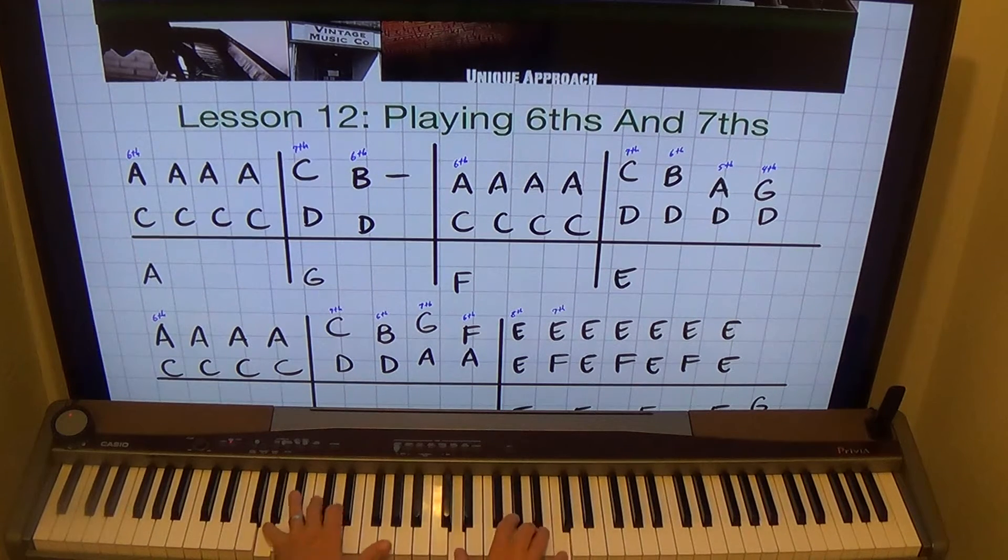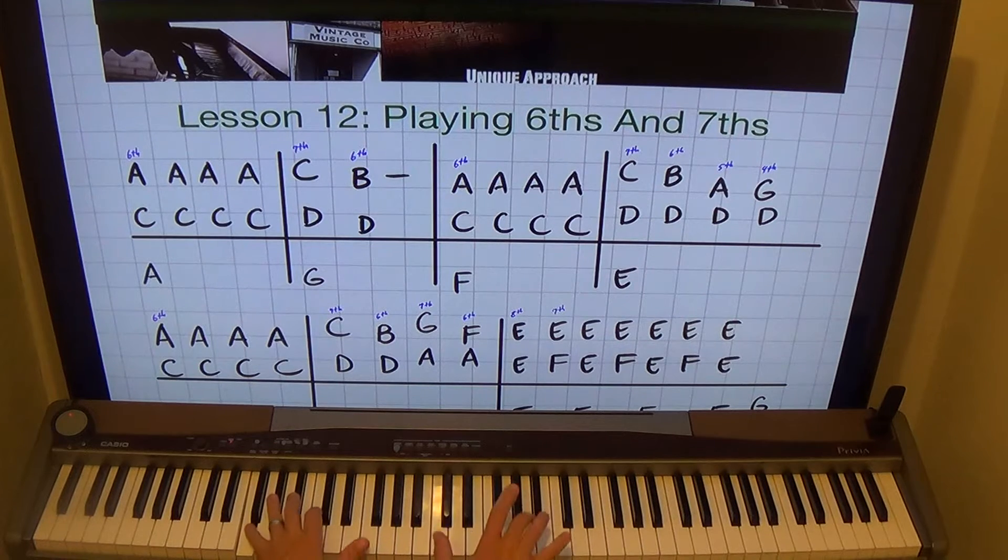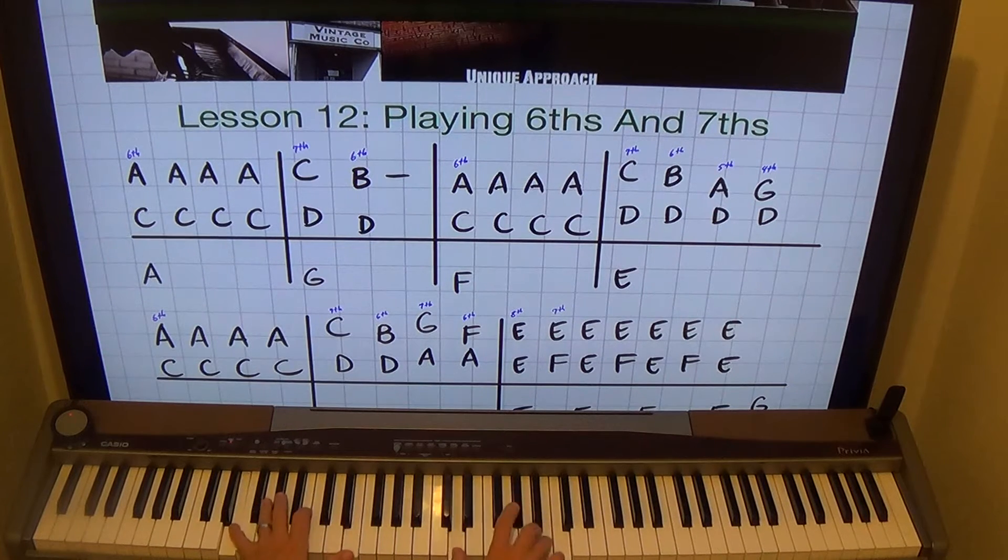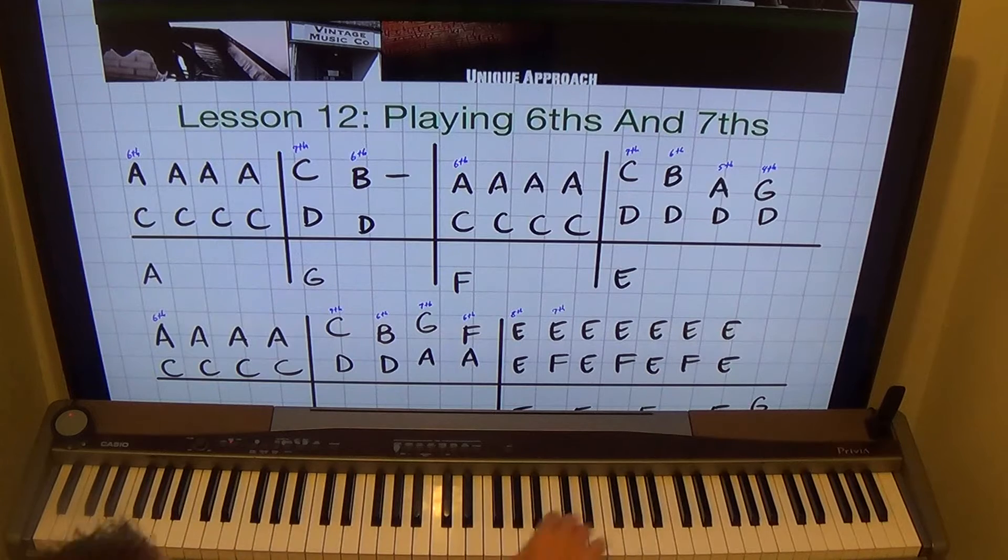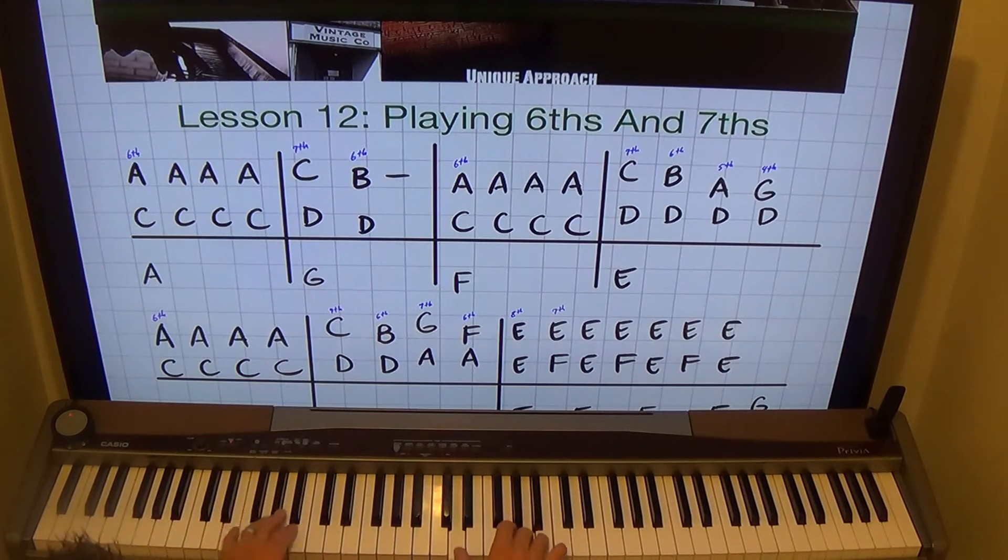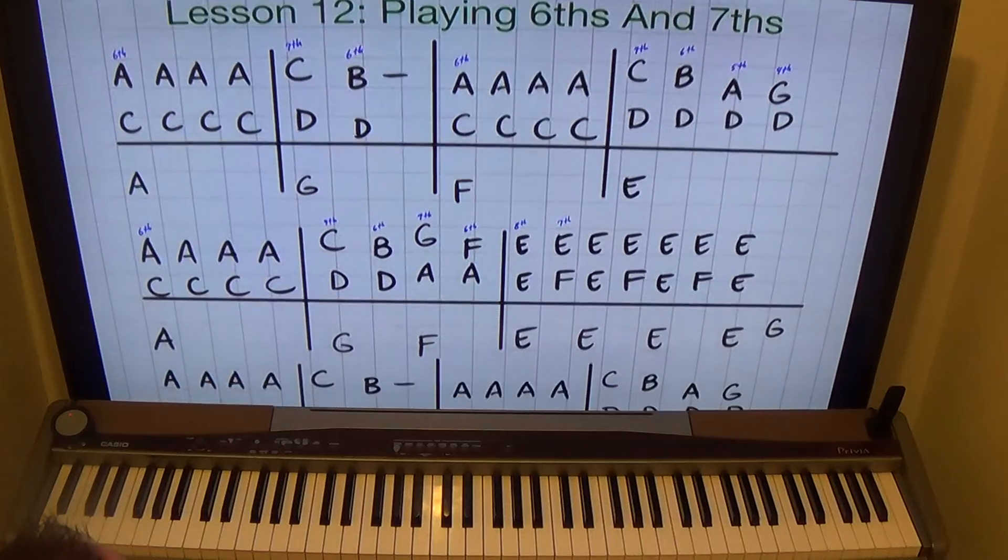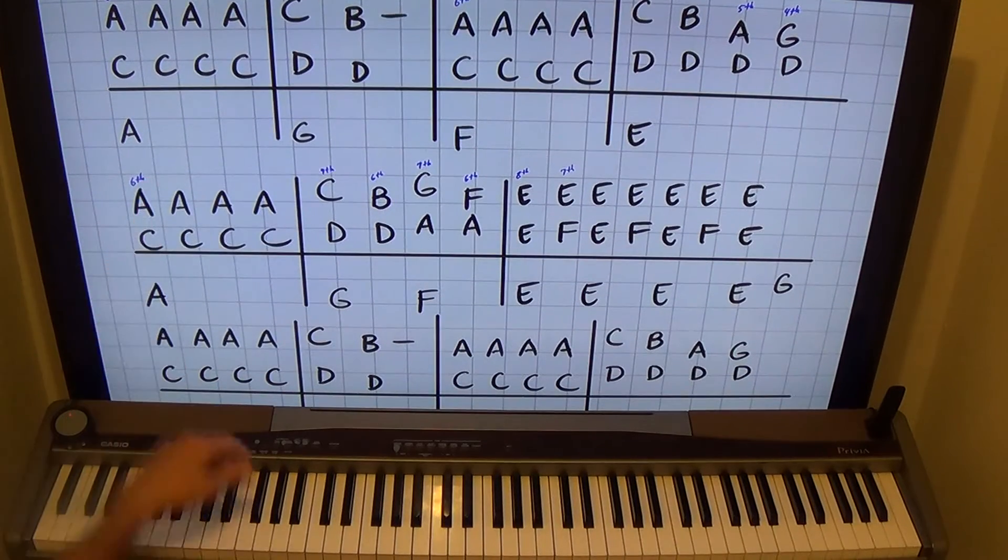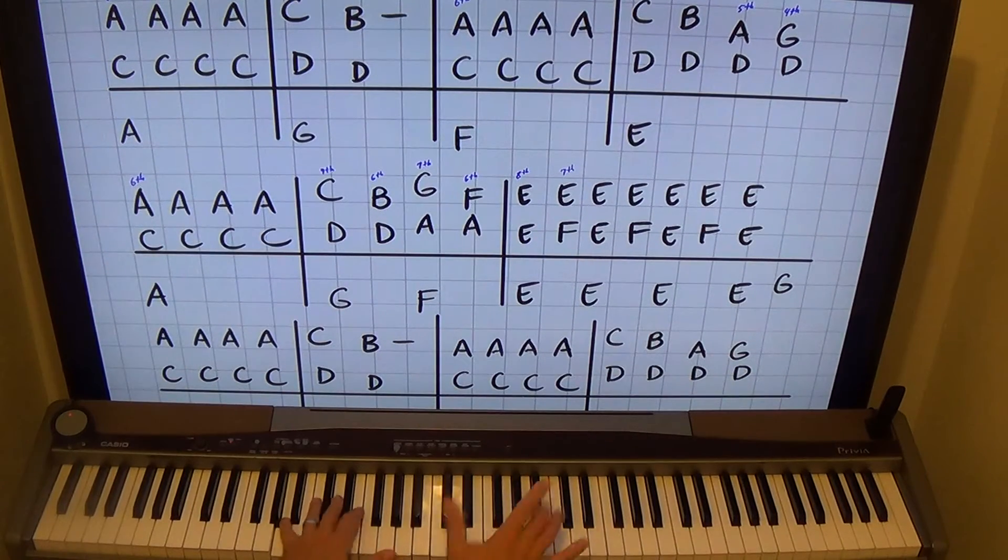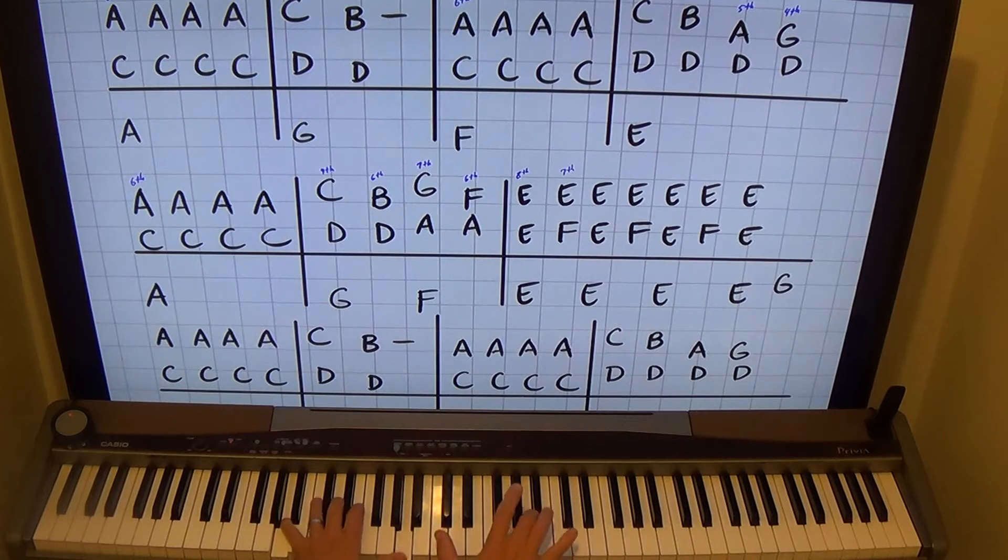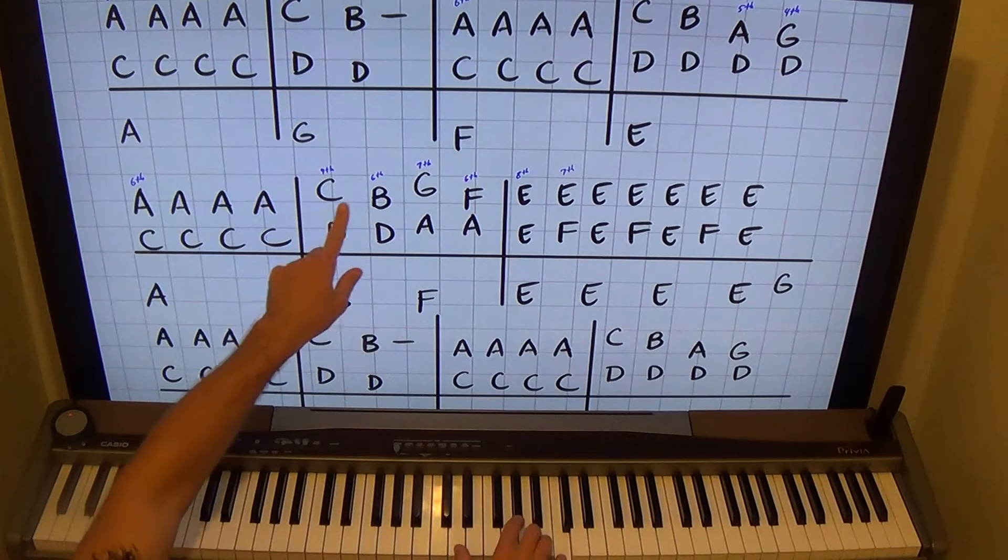8, 7, 6th, 6th, 7, 6th. I put a little G in there. On the left hand to move me into the next line there. So this one starts out the same. 6th. Using my 3rd finger. 7, 6th.